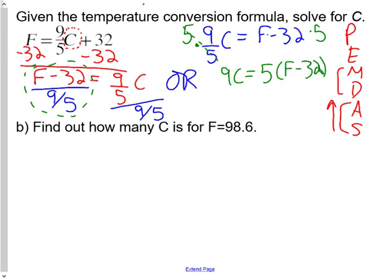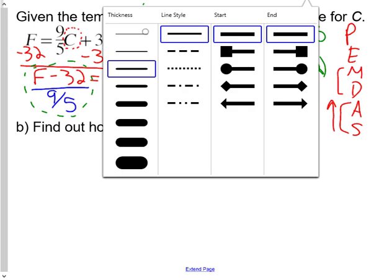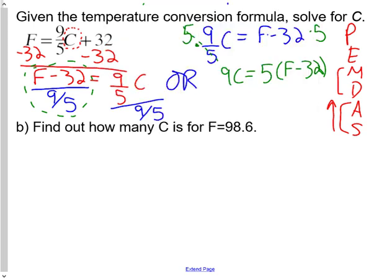So you get 9C equals 5 times F minus 32. And then we have 9C, so now we just want 1C. So we're going to divide by 9 on both sides. And then we get C equals 5F minus 32 over 9. And so this multiplied by was technically two steps. And that is that.